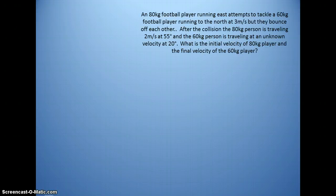On to our next problem. We're going to stay with the football players. But this time they are bouncing off each other. You've got one running east, one running north. And we want to know the initial velocity of the 80 kilogram player and the final velocity of the 60 kilogram player. Please feel free to pause the video to write down the problem and perhaps even set up your picture. So here we have the two players running towards each other. The 80 kilogram player has an unknown initial velocity. Afterwards they bounce off each other. We know the angles they're moving at, but we don't know the final velocity of object B.